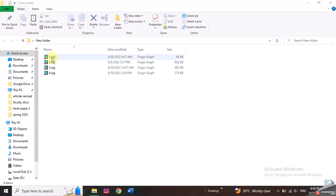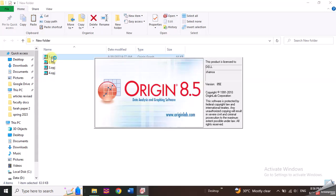So here you can see on the screen, I have one, two, three, and four graphs and I want to merge these Origin graphs into one file. So let me first open the first graph.